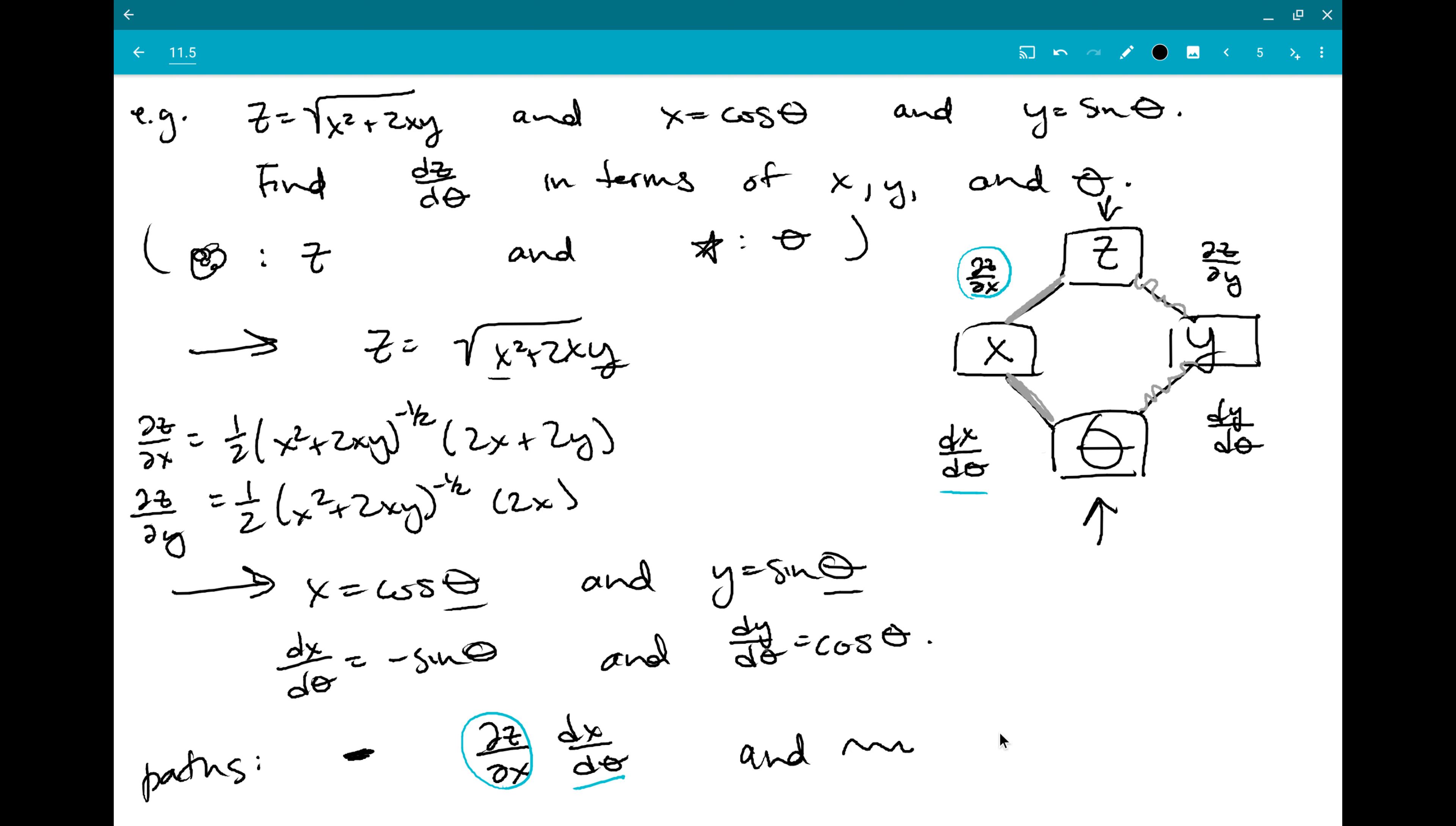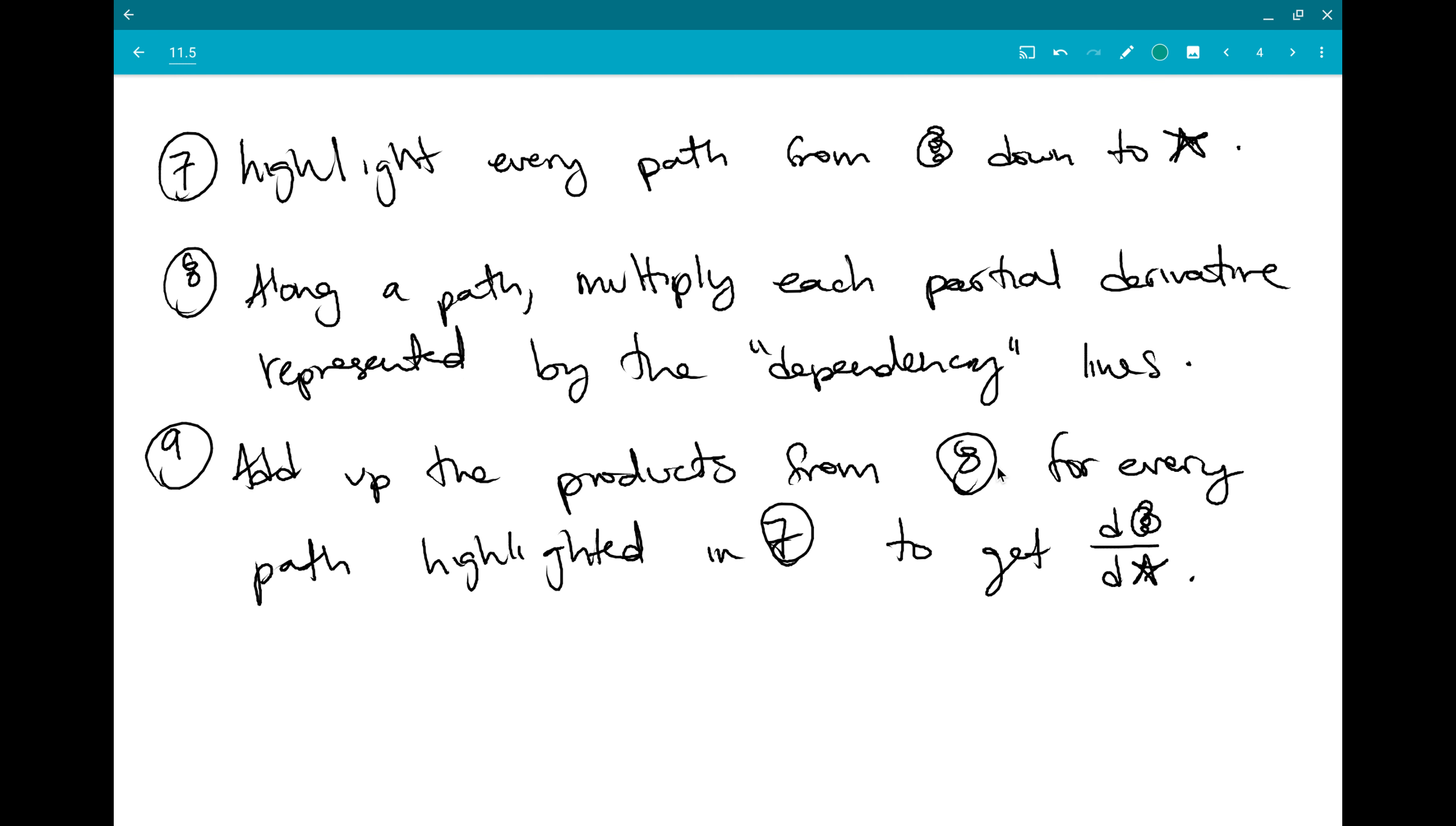And then along the curvy line path, I have dz dy times dx. I'll put those in quotes so you know that I'm not saying like minus and something weird there. And that's just coming from there's dz dy and there's dy d theta. So start from the top, go down to the bottom, and just multiply all the lines that connect you.